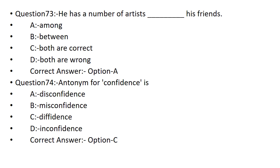Antonym for 'confidence' is: Option A: DISCONFIDENCE. Option B: MISCONFIDENCE. Option C: DIFFIDENCE. Option D: INCONFIDENCE. Option C is the correct answer — DIFFIDENCE. The antonym for confidence is DIFFIDENCE.